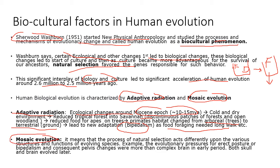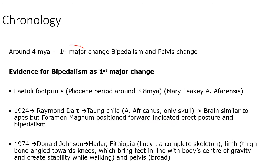Mosaic evolution means that natural selection acts differently upon various structures — our brain can evolve independently of our hands, and our legs can evolve independently of our pelvis. Different features evolve at different times. This is why the first major change in humans around 4 million years ago was bipedalism and pelvis change, not skull change.